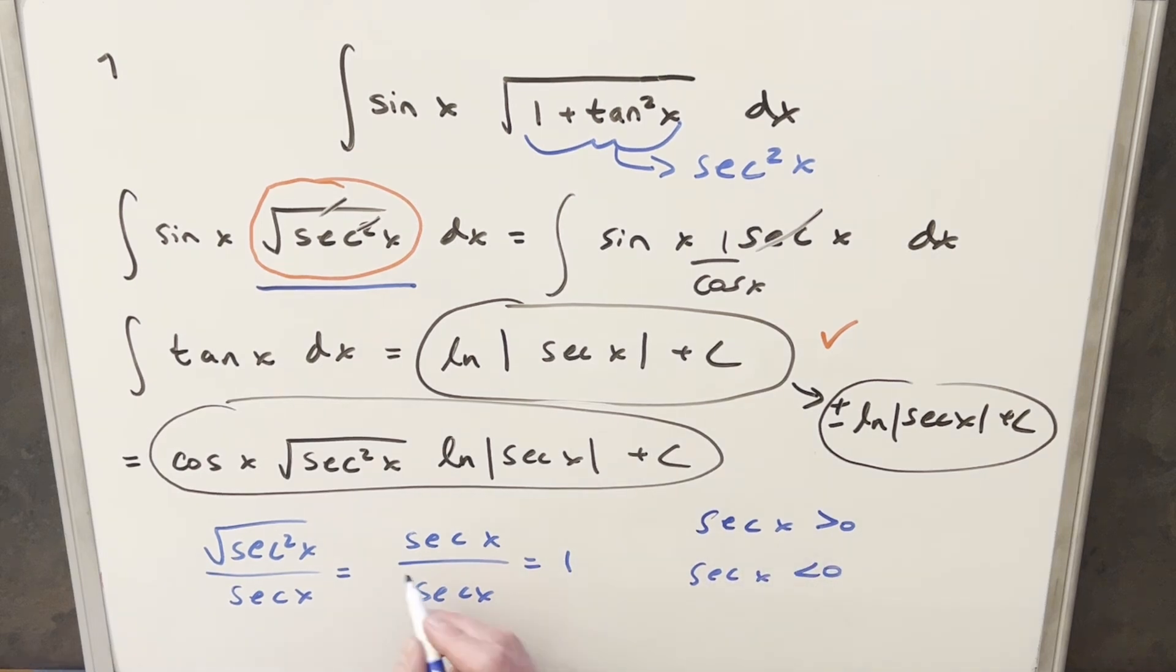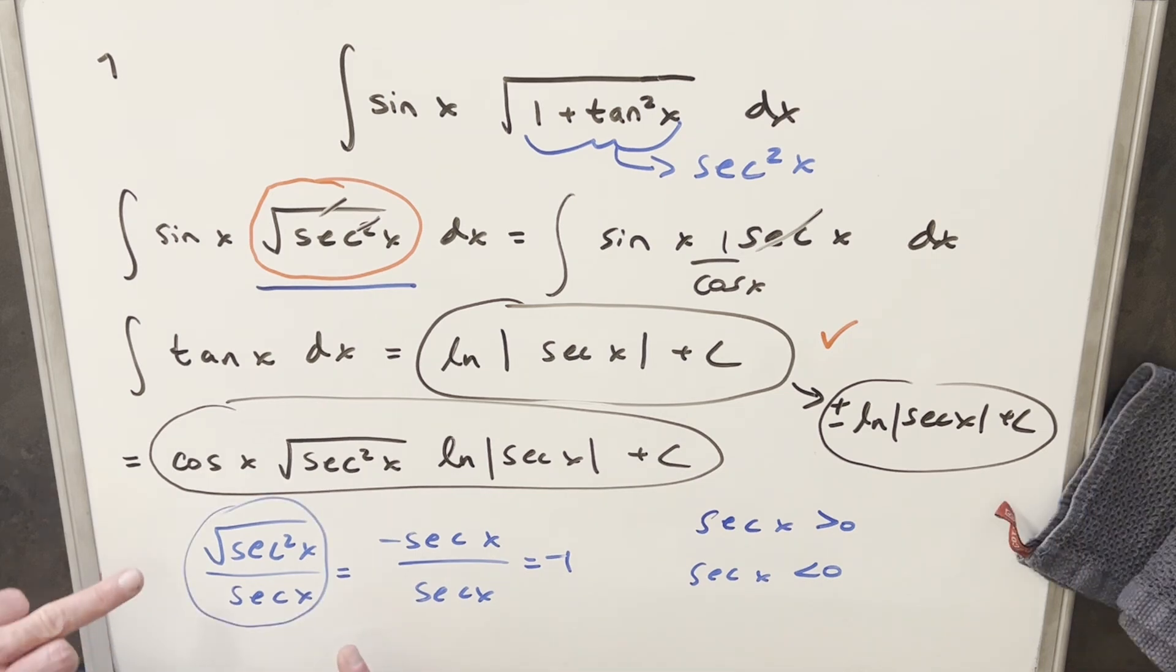When it's less than zero, this is minus secant x, so this becomes minus one. So by multiplying our solution by this thing, we're actually adding the plus minus, but we're adding it in the regions where it belongs. When secant of x is greater than zero and less than zero, it puts the plus and minus on it in the right cases.